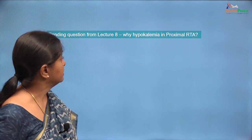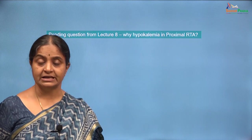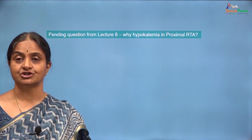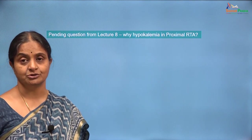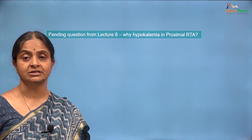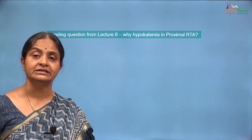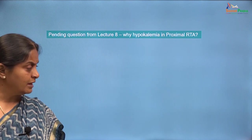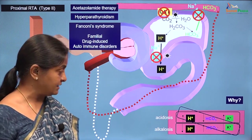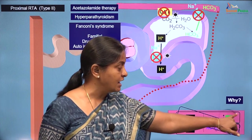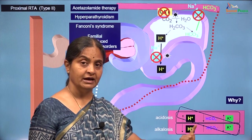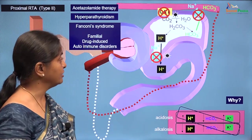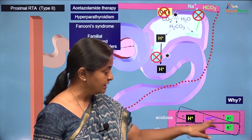We have one pending question from the last lecture: in proximal renal tubular acidosis as in hyperparathyroidism, why is there hypokalemia? Not just hyperparathyroidism — in all states of proximal renal tubular acidosis, why do we have hypokalemia? This is important because the general rule is that in all types of acidosis you are likely to have hyperkalemia, except for two states — type 1 distal RTA and type 2 proximal RTA. These are the two conditions where acidosis coexists with hypokalemia.